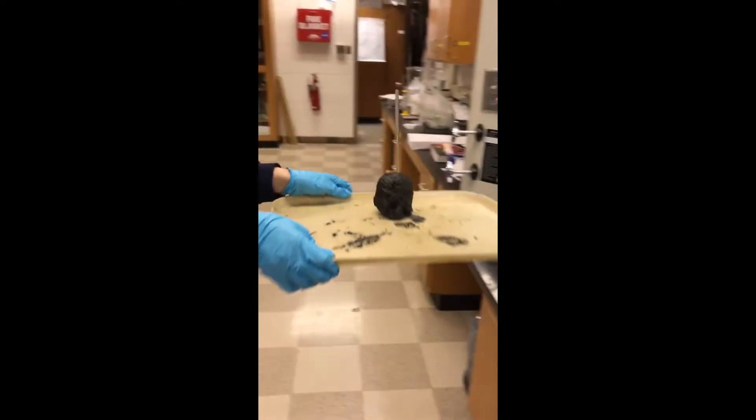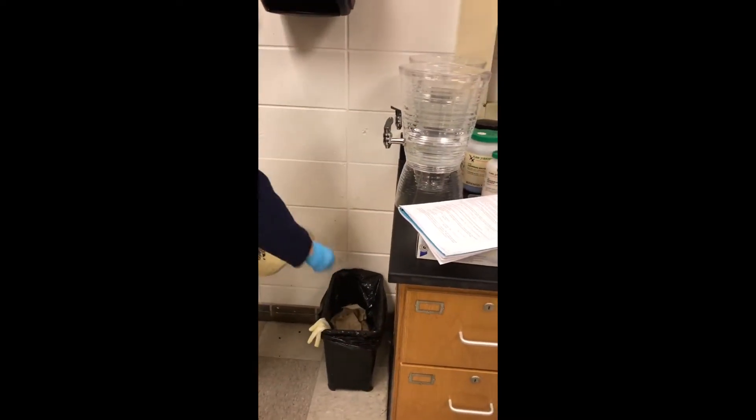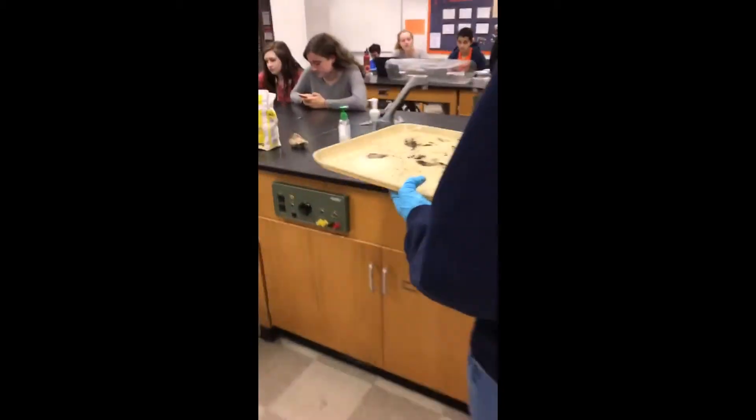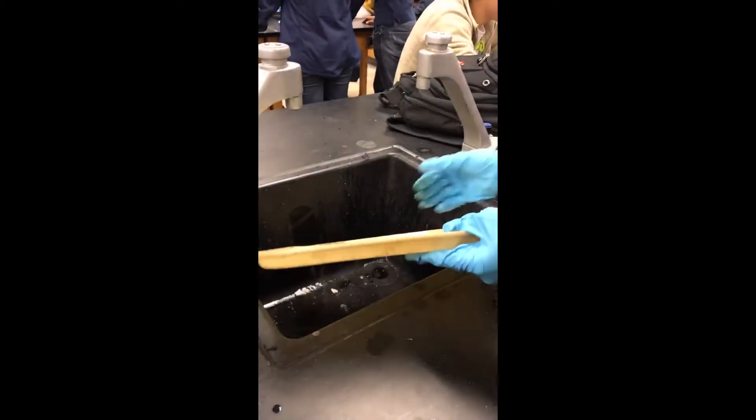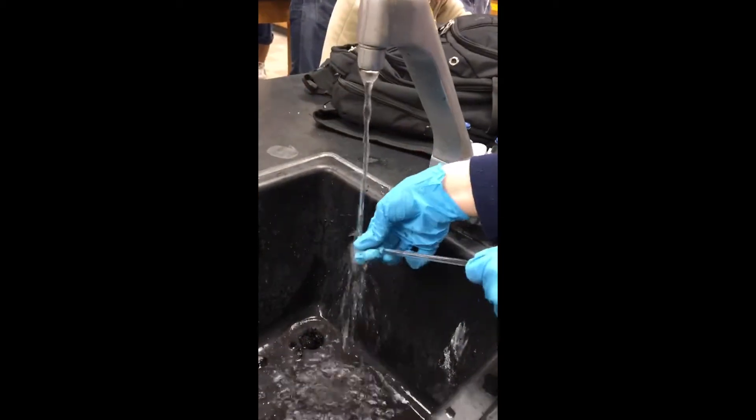Grab the tray on which the reaction occurred and dispose of the Dixie cup in the nearest trash can. Pour a small quantity of soap solution onto the tray and rinse it under the sink. Finally, make sure to clean off the stirring rod.